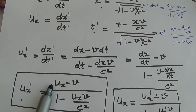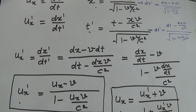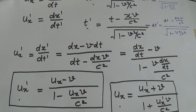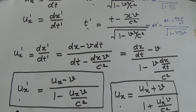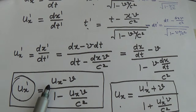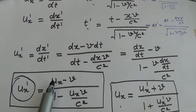So ux prime is equal to ux minus v upon 1 minus ux·v upon c squared. If in a numerical problem I have to find out ux prime, I will use this formula. It means that in the numerical problem these two parameters are given: ux and v. And c we know — that is the speed of light. V is the relative velocity, and ux is the velocity of that particle according to the observer O.